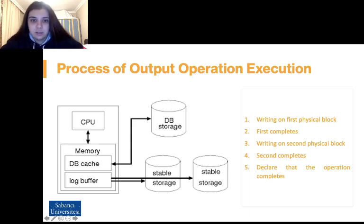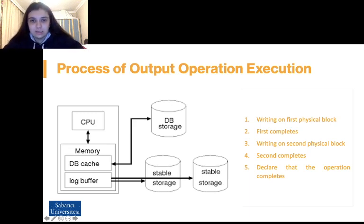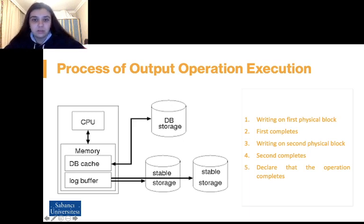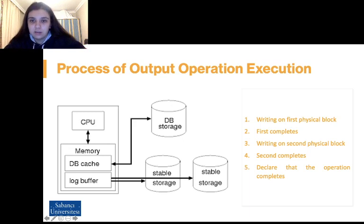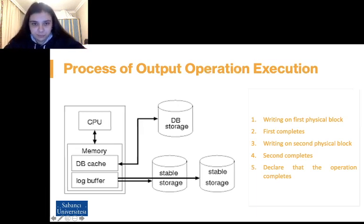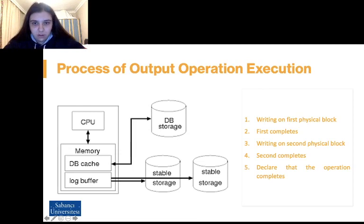An output operation is executed as follows. First, it writes the information onto the first physical block. Second, when the first write completes successfully, it writes the same information onto the second physical block. Third, when both operations complete successfully, it declares the operation as complete. The schema on the left demonstrates these steps.